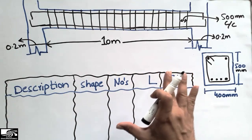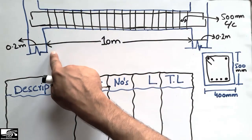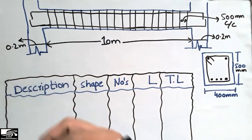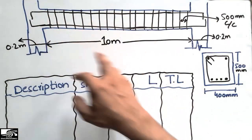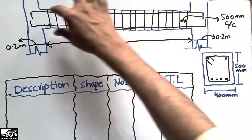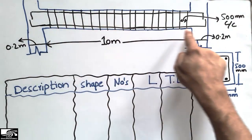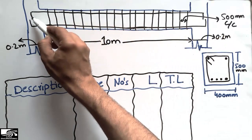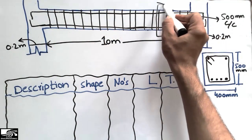This is the beam given to us. The length of the beam is 10 meters. It is supported by two columns — one on the left and one on the right — so it behaves like a simply supported beam but with fixed joints at the columns. The steel bars are moving through the beam inside the columns. You can see the bottom bars and the top bars, which are shown at cross section A of the beam.